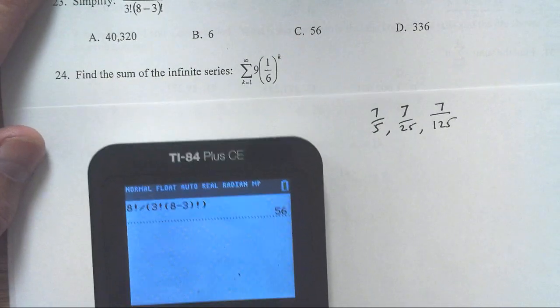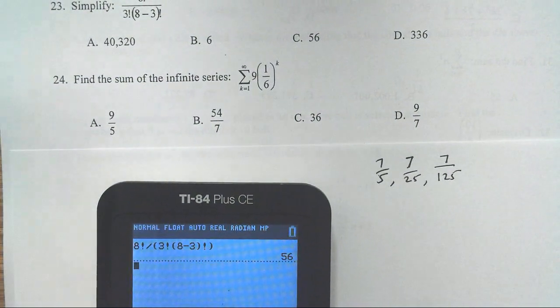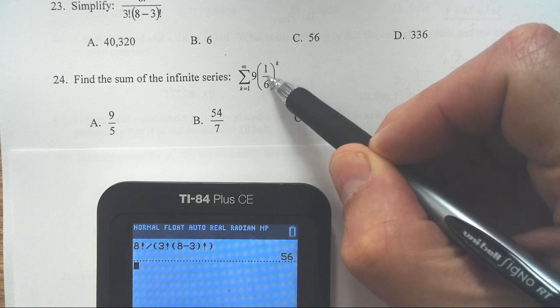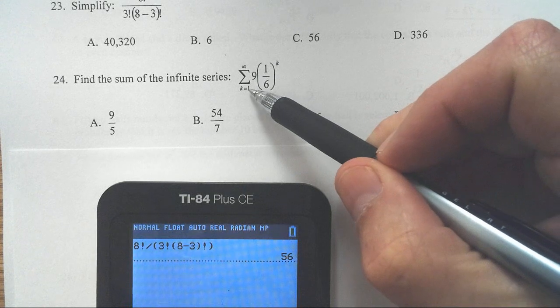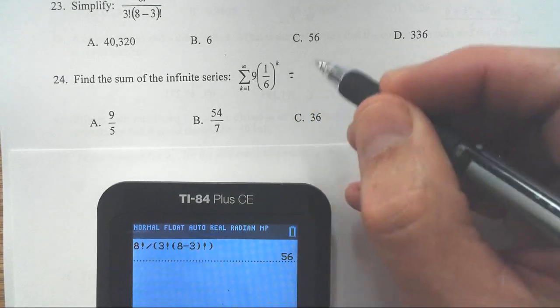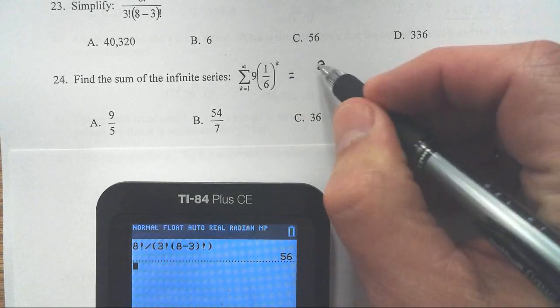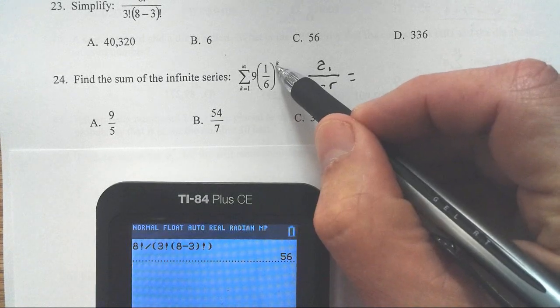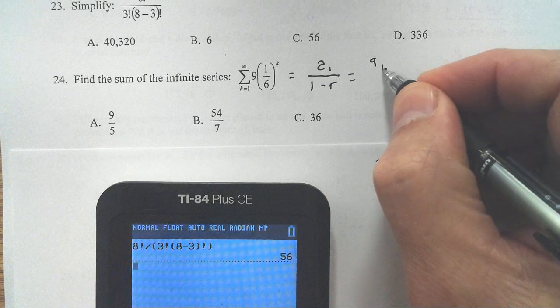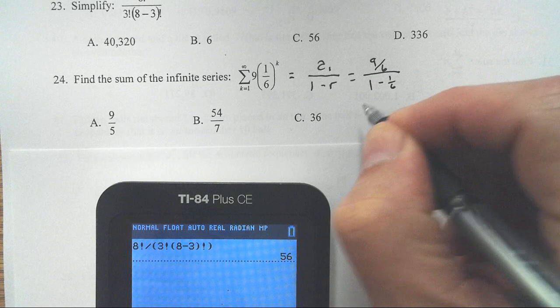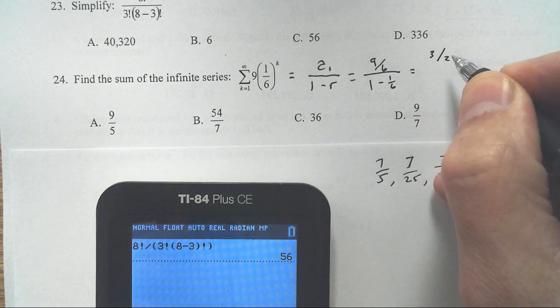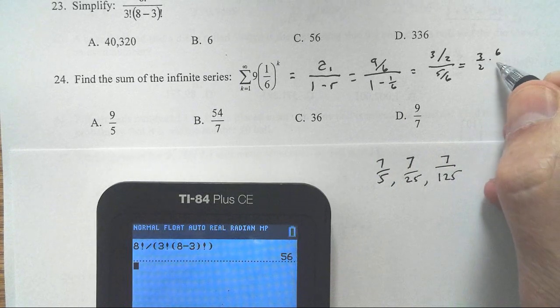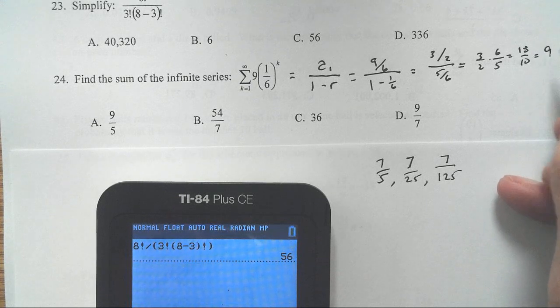This one, there's a nice formula for this. This is a frog on a log problem where every single time I'm jumping, my ratio is less than one. The frog jumps only 1/6 of the distance it jumped before. The formula for these frog on a log problems is the infinite sum is the first term over 1 minus the ratio. The first term when k is 1 is 9 times 1/6 or 9/6 over 1 minus the ratio. The ratio is 1/6. So I get 3/2 divided by 5/6 or 3/2 times 6/5, which is 18/10 or 9/5.